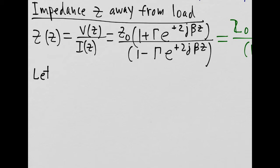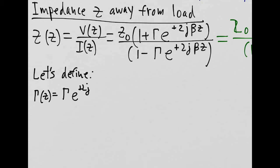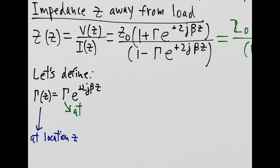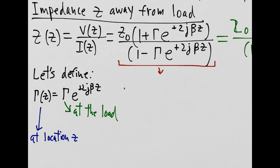Using the expression for impedance, we can define the reflection coefficient as a function of z, which gives us the reflection coefficient anywhere on the transmission line. It is simply equal to gamma — the reflection coefficient at the load — multiplied by e to the plus 2j beta z. So it is just a vector of magnitude gamma that rotates around the circle. Using this definition, we can rewrite the expression for the impedance Z of z.